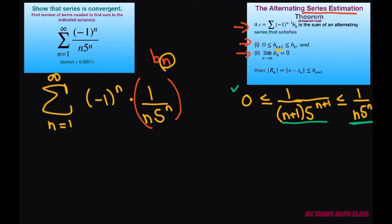And let's look at the limit as n approaches infinity of 1 divided by n times 5 to the nth power. And that does equal 0. Because the denominator gets really large, this goes to 0. So it satisfies both of these.